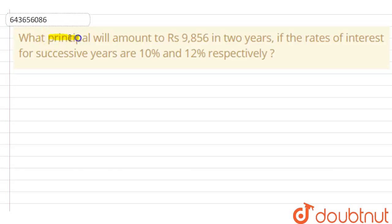Here the question is: what principal will amount to rupees 9,856 in two years if the rate of interest for successive years are 10% and 12% respectively?